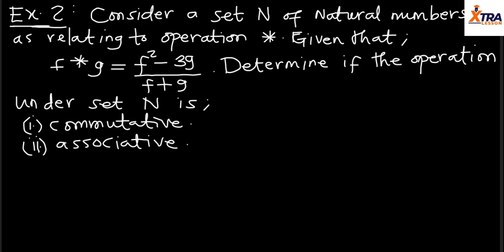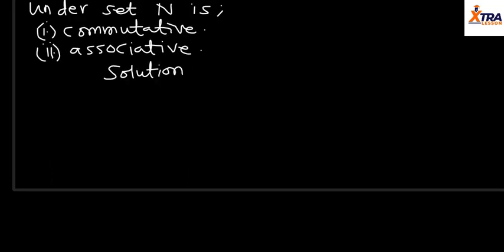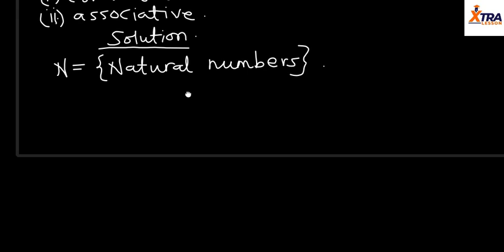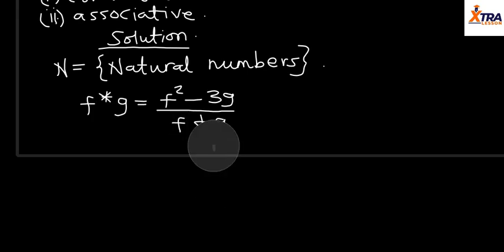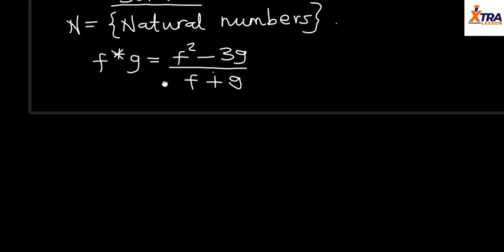Hello guys, welcome to today's class. We'll be looking at a question under associative property. This question will actually consider both associative and commutative properties. We are given a set N of natural numbers with an operation asterisk defined as: f★g = (f² - 3g) / (f + g). We need to determine if this operation is associative and commutative.